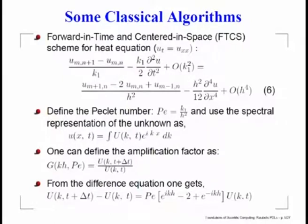We are solving u_t = u_xx, and the time derivative is done by Euler time integration — that is what we mean by forward in time. We are at the j-th time level and trying to find the solution at the (j+1)-th level. The second derivative u_xx is approximated by a central scheme — that is why we have the acronym FTCS: forward in time, centered in space.